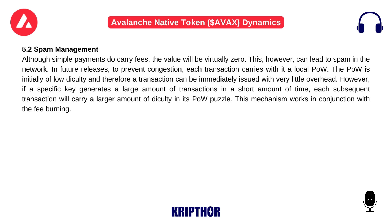Section 5.2: Spam Management. Although simple payments do carry fees, the value will be virtually zero. This, however, can lead to spam in the network. In future releases, to prevent congestion, each transaction carries with it a local proof-of-work. The POW is initially of low difficulty, and therefore a transaction can be immediately issued with very little overhead. However, if a specific key generates a large amount of transactions in a short amount of time, each subsequent transaction will carry a larger amount of difficulty in its POW puzzle. This mechanism works in conjunction with the fee burning.